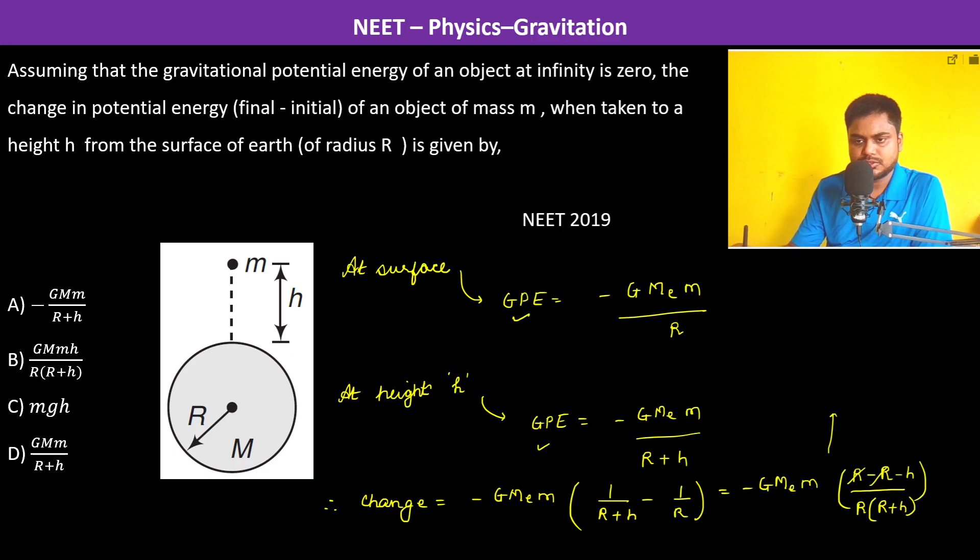So this is equal to G M_e m h divided by R times R plus h. So therefore the answer is going to be B. Thank you.